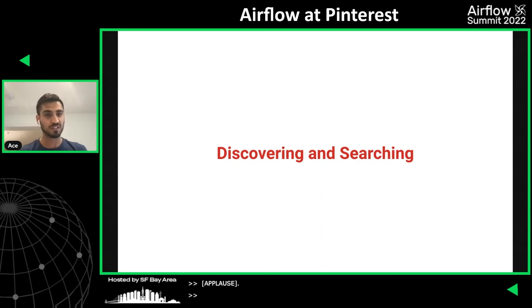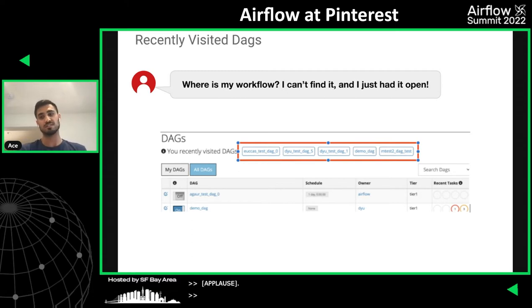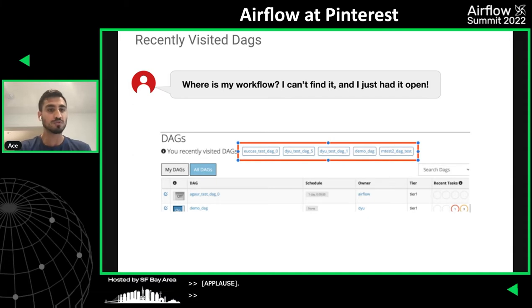With that, we'll jump into discoverability and searching for DAGs. A common issue is that users say they can't find their workflow after closing it. We have multiple clusters, and within the same workflow cluster users find themselves looking at the same workflows repeatedly. So we built in a feature showing the five most recent DAGs that users have visited, and they can simply click to navigate directly.